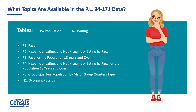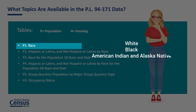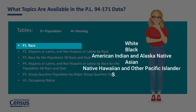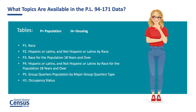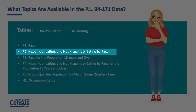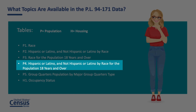The official titles of the six tables available are as follows. The P1 table presents the population breakdown by race. Redistricting data is offered for White, Black, American Indian and Alaska Native, Asian, Native Hawaiian and Other Pacific Islander, and Some Other Race, as well as any combination of these six races. The P2 table presents data for Hispanic or Latino and Not Hispanic or Latino by race. The P3 table presents race for the population 18 years and over. The P4 table presents Hispanic or Latino and Not Hispanic or Latino by race for the population 18 years and over.